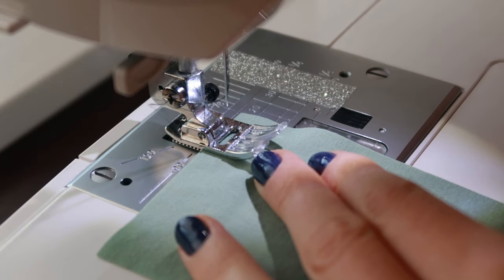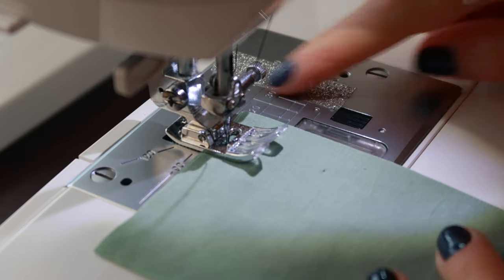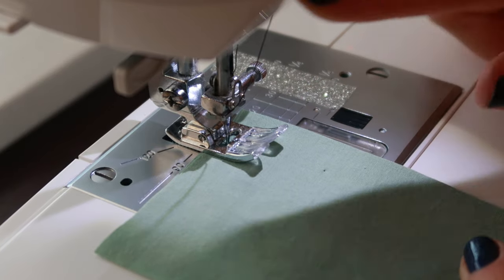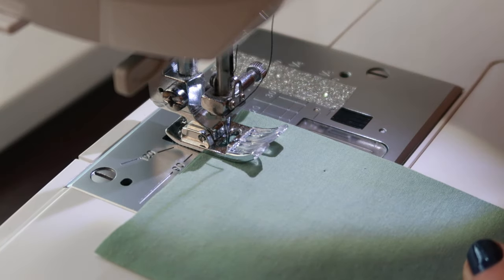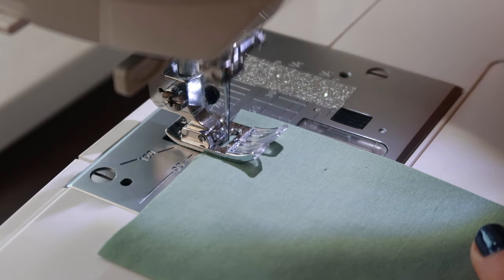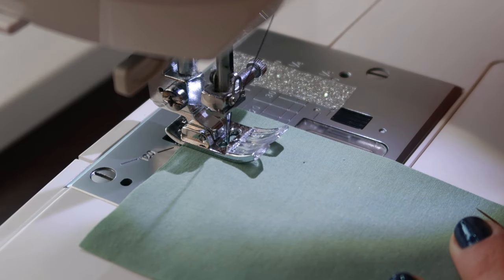Remember that a plain stitch or seam is simply any stitch that we use to attach two pieces of fabric together. In order to apply seam finishes we first have to have a seam attaching two pieces of fabric together. And that's what you see here.